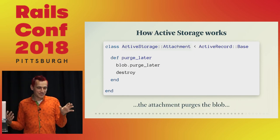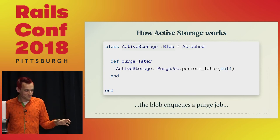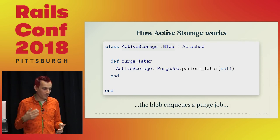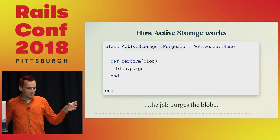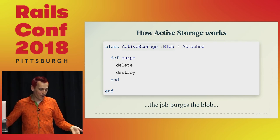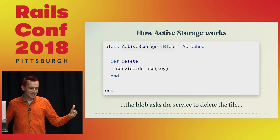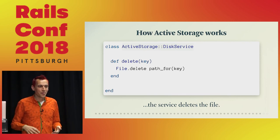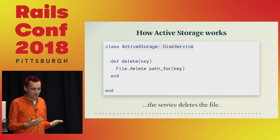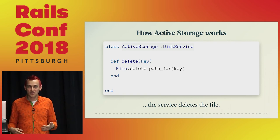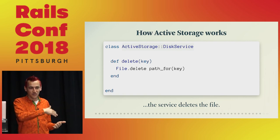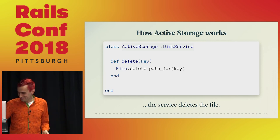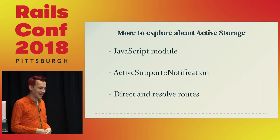When you destroy an instance of a cat it calls picture.purge_later. purge_later checks if there is an attachment and calls attachment.purge_later. The attachment is destroyed from the database, but then it also calls blob.purge. The blob calls a job — an Active Job — saying 'I don't really need to delete this file in real time, I can let a job do this a few seconds from now.' When the job runs it calls blob.purge, which destroys the blob and calls delete on the service — for instance DiskService calls File.delete. This demonstrates separation of concerns: the cat doesn't even know the file is on S3.